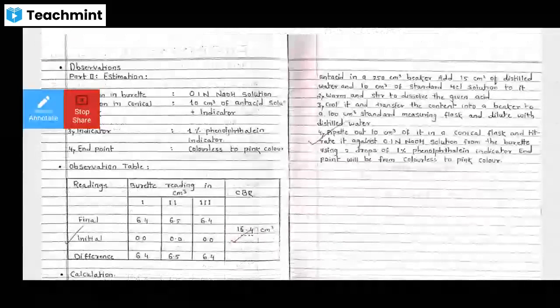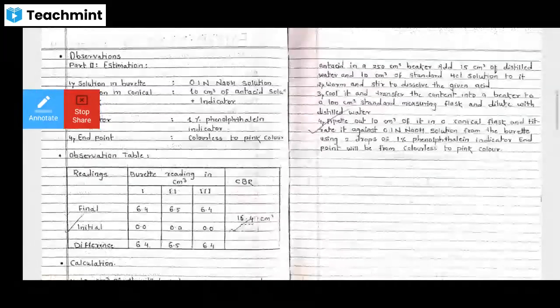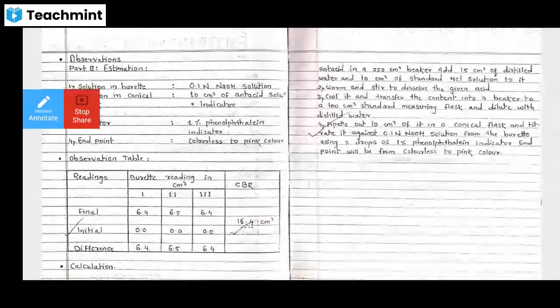Dilute it with distilled water. Pipette out 10 cm³ (10 ml) of it in the conical flask and titrate it against 0.1 normal NaOH from the burette using two drops of 1% phenolphthalein indicator. End point will be colorless to pink color. This is the procedure.